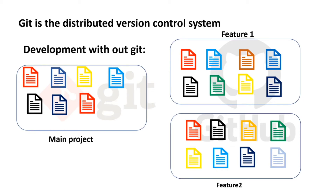Now coming to distributed version control system. Distributed version control system means one main remote repository will be there, and whoever the developers are working on that repository will create a local copy. Each developer has their local copy, they work on it, and at the end they collaborate those local copies to the remote repository. This is called a distributed version control system.